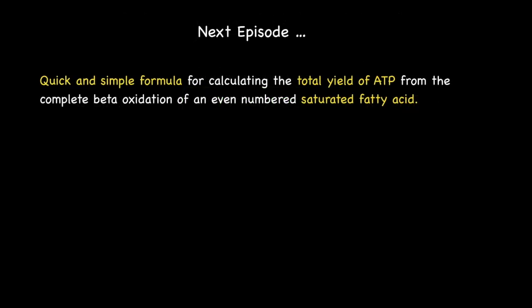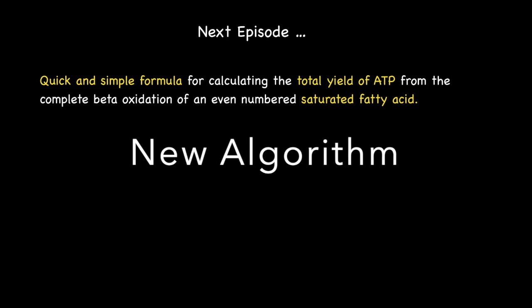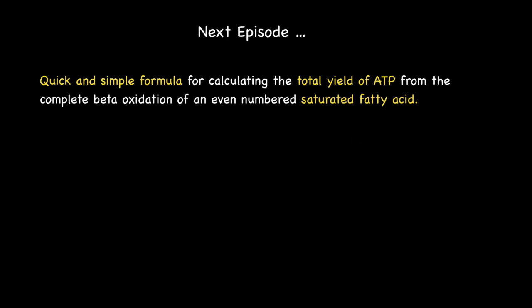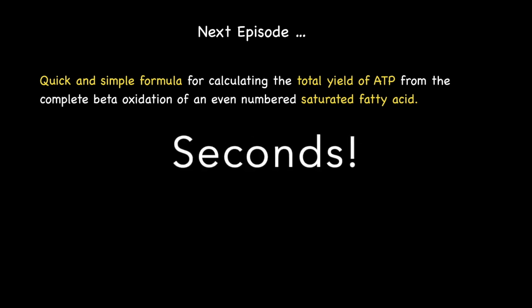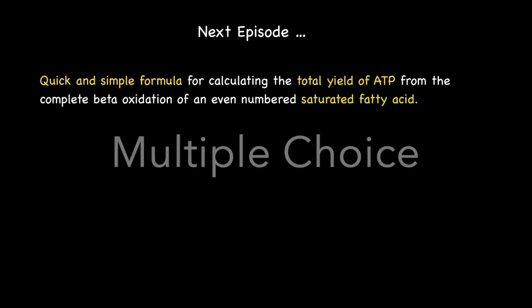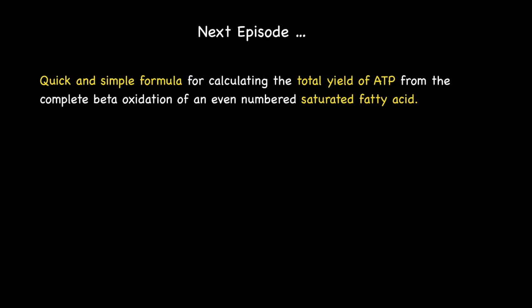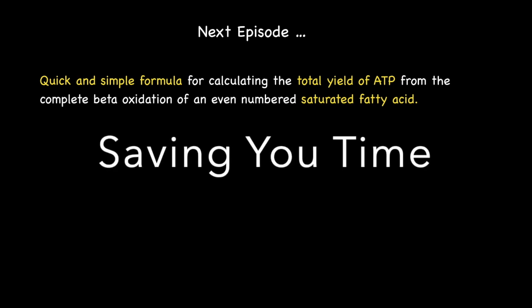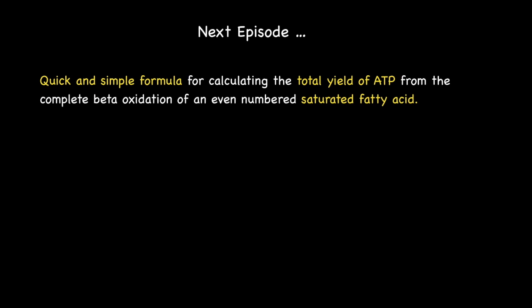In my next episode I'll be presenting a quicker and simpler way for calculating the total yield of ATP from the complete beta-oxidation of an even-numbered saturated fatty acid in the form of a new algorithm. While the previous process may have taken you a couple of minutes, this new algorithm will literally take you only seconds, useful for multiple choice questions and checking answers to short and long answer questions. Please subscribe and click the bell icon to be notified when this is released, and if you found this presentation useful please click like. Thank you for listening.